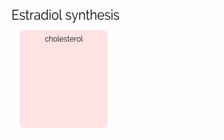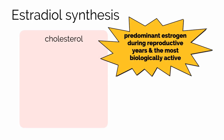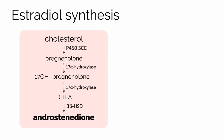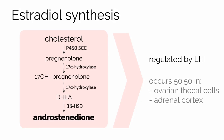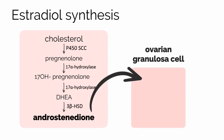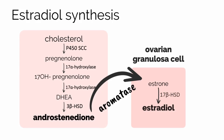Like testosterone, estradiol is synthesized from cholesterol. Estradiol is the predominant estrogen during reproductive years and is the most biologically active form of estrogen. Cholesterol is converted to androstenedione through the same pathway as in males. However, unlike in males, in females this pathway is regulated by LH and occurs 50-50 in the ovarian thecal cells as well as the adrenal cortex. After its conversion, androstenedione is transported to ovarian granulosa cells, where it is aromatized to estrone, and then estrone is converted to estradiol by 17-hydroxysteroid dehydrogenase. This process of aromatization is regulated by FSH.